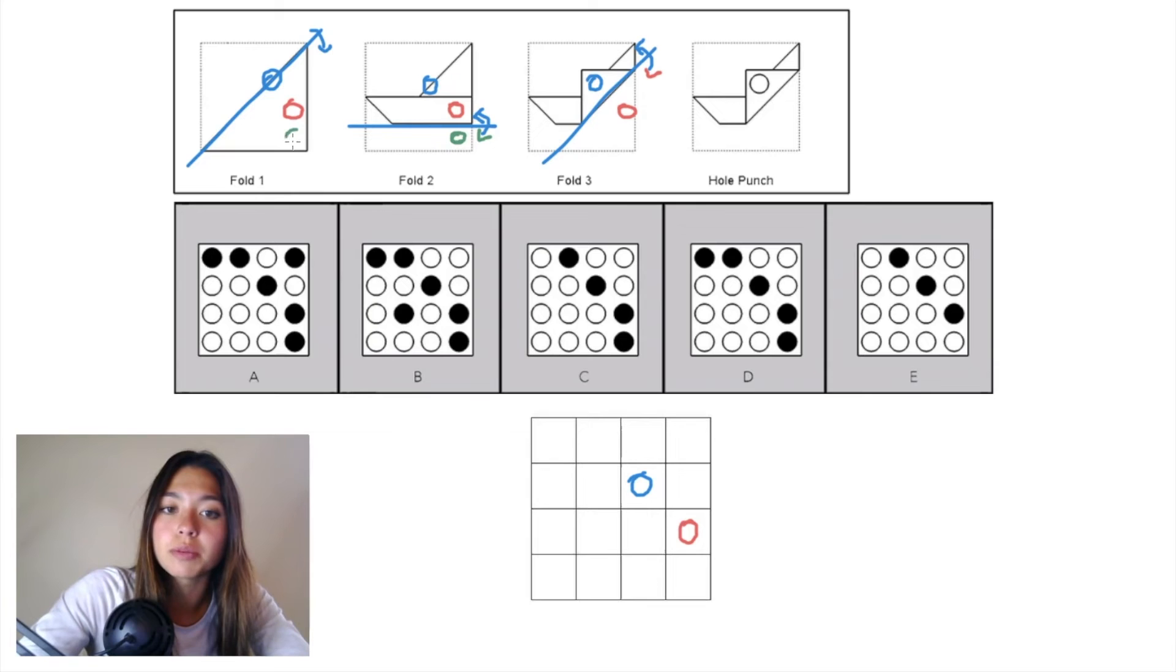That green hole punch ends up on paper in fold 1 as well. We can draw that same horizontal plane from fold 2 on our grid and reflect that pink hole punch over.